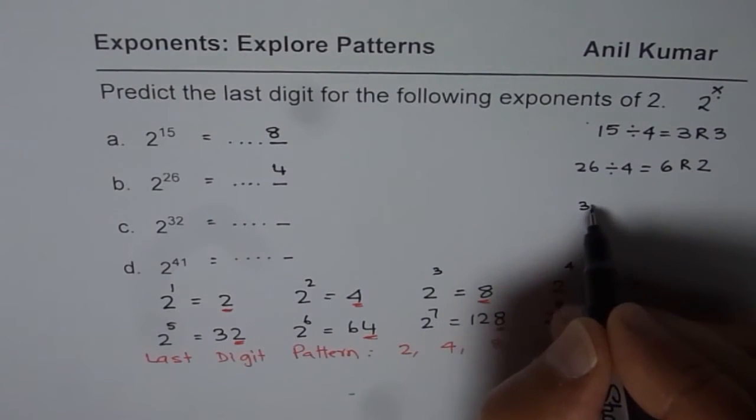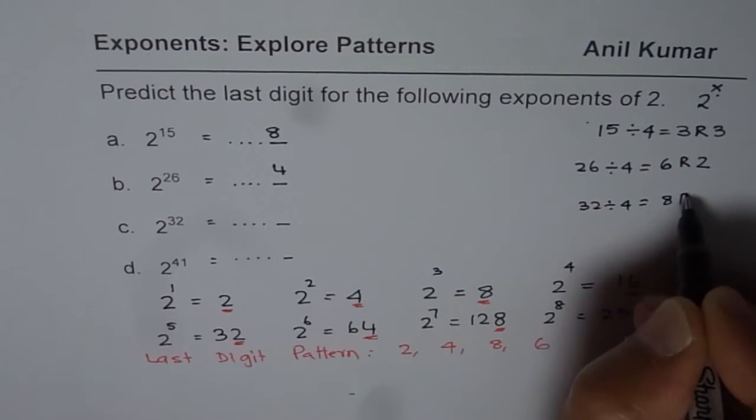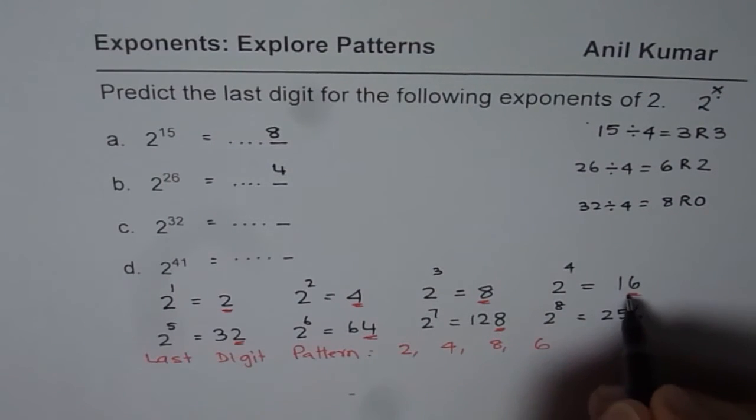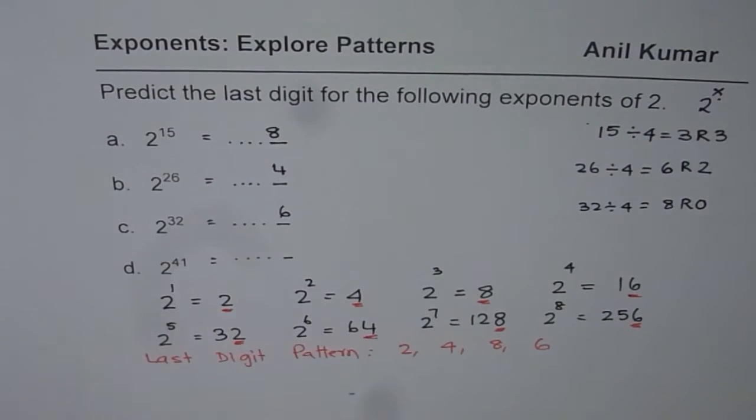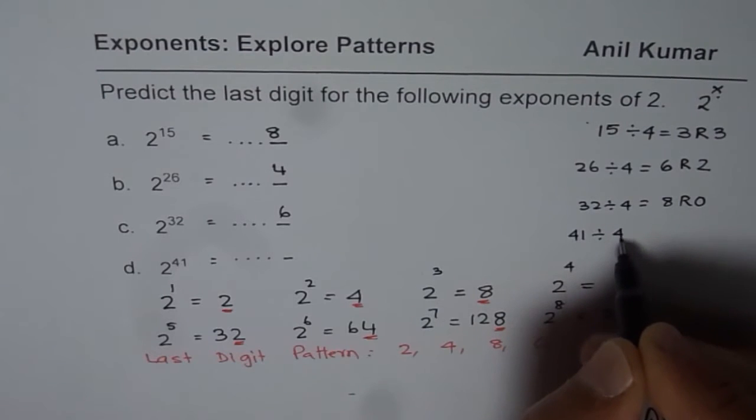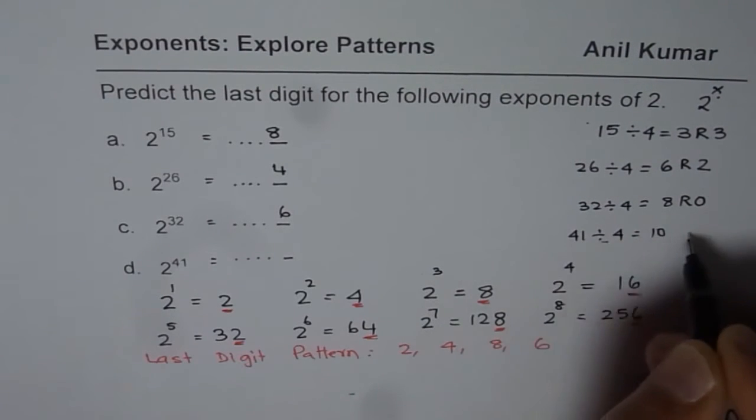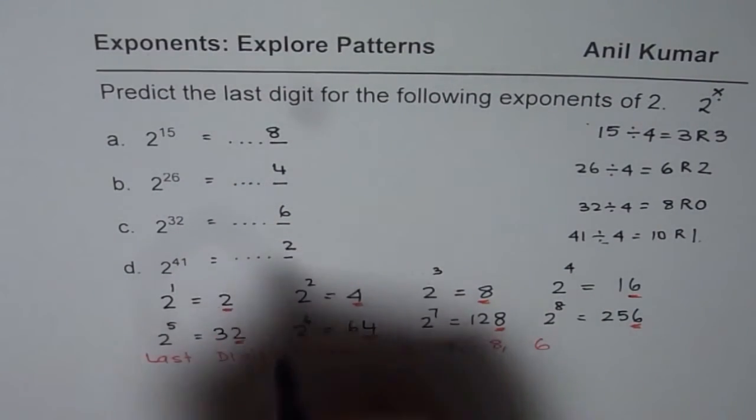32 divided by 4 is 8. Remainder is 0. If the remainder is 0, the 6 is the number in the last place. 41 divided by 4 is 10, that's 40, remainder 1. So 2 should be in the last place.